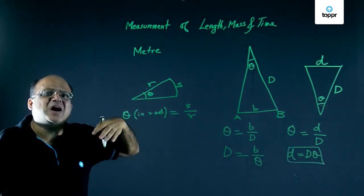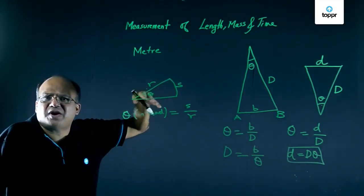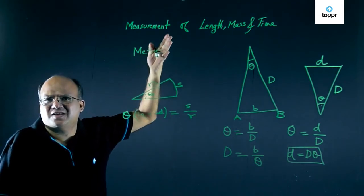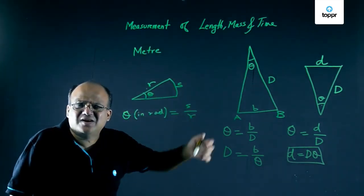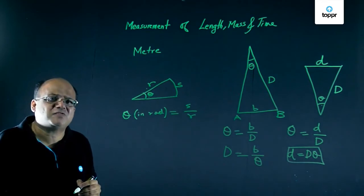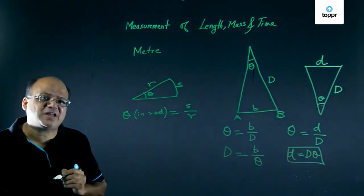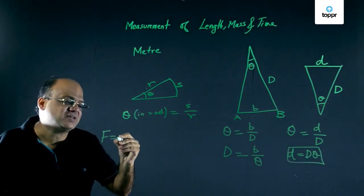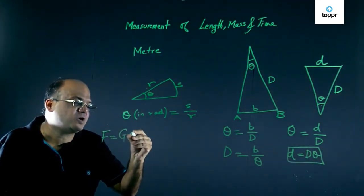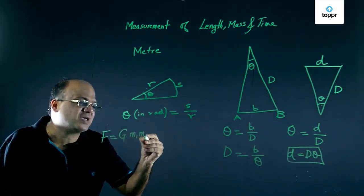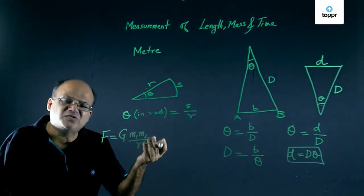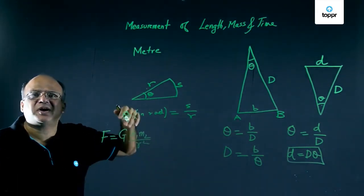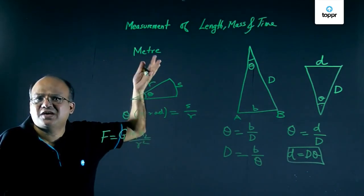How to measure large masses? How to find out the mass of sun, stars, planets. For this, we use Newton's law of gravitation. Newton's law of gravitation tells us the force between any two particles is given by Gm1m2 by R square. So using this equation, we can find the masses of heavenly bodies.